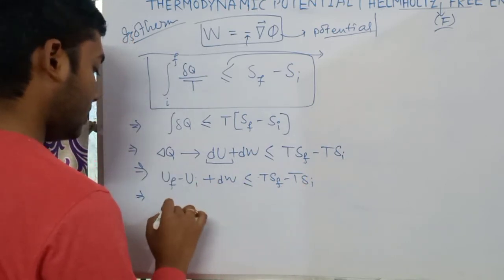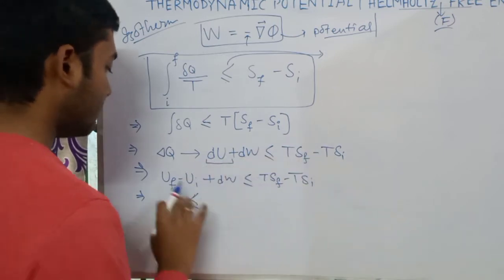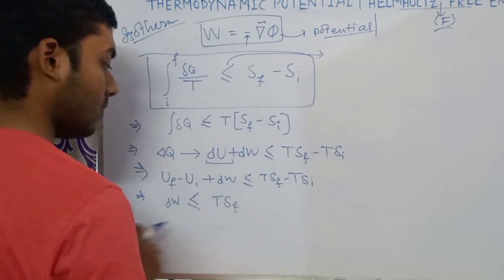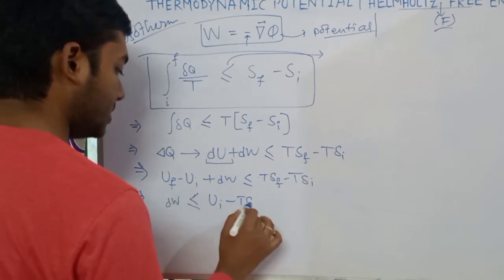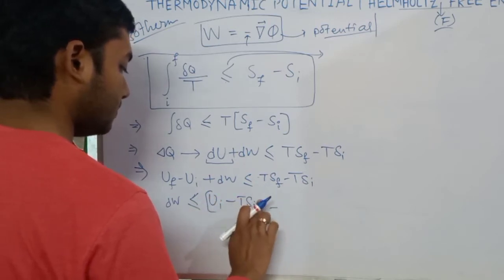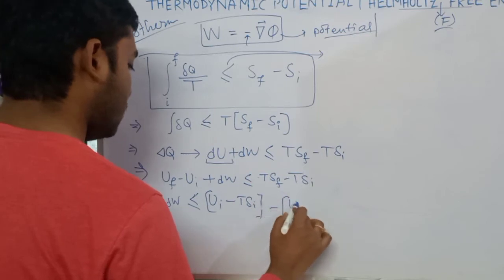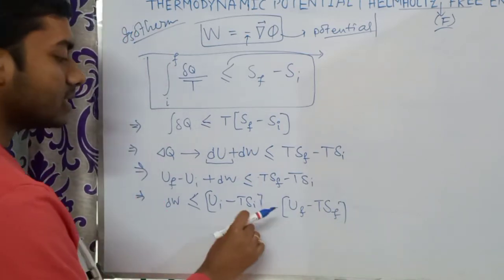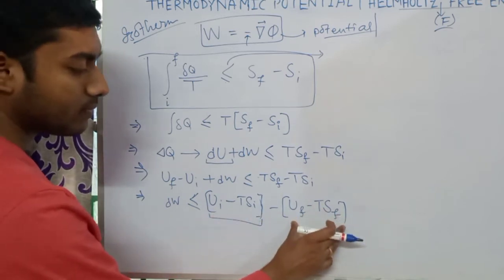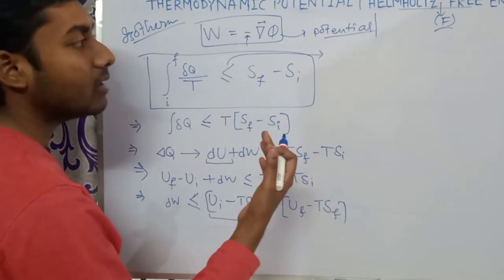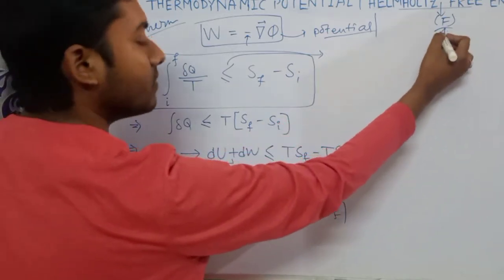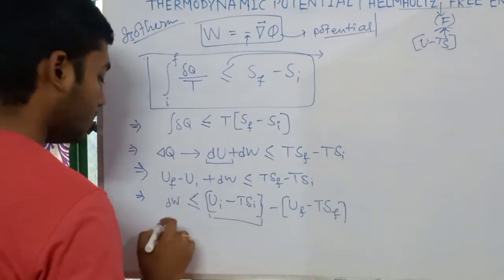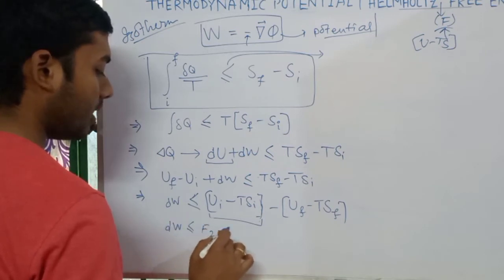From here, I can write dW on one side and the other terms on the other side, giving dW less than or equal to T·S_f minus T·S_i minus dU. If I denote the quantity U minus TS with a new function F, then this becomes dW less than or equal to F₂ minus F₁. This new variable F is called the Helmholtz free energy, or simply free energy.